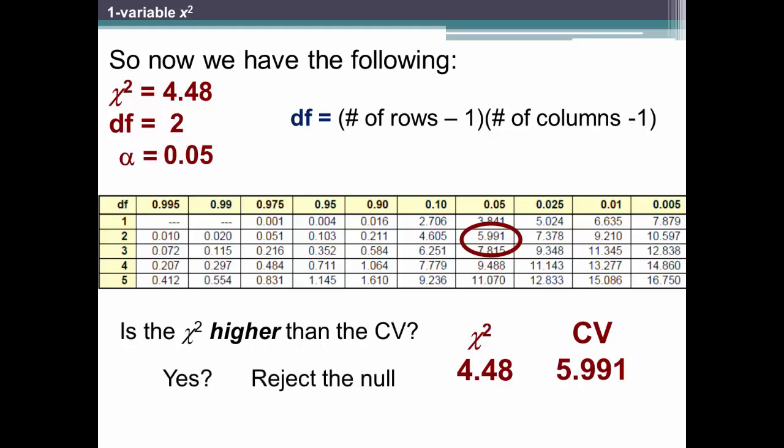If yes, then we reject the null. But 4.48 is less than the critical value of 5.991, meaning we must accept the null and conclude that our data do not support that there are differences between males and females on the variable of learning styles.